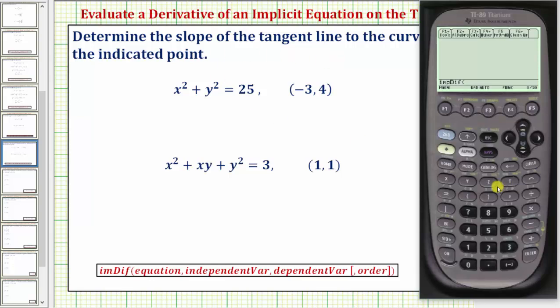For this first problem we'll enter x raised to the power of two plus y raised to the power of two equals twenty-five, and then comma x comma y. We can leave off the order because we're looking for the first derivative, and the first derivative is the default for this function. So we enter close parenthesis. If we press enter now we would get dy/dx which we see here.